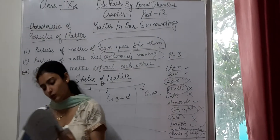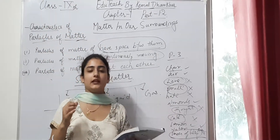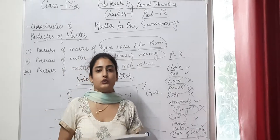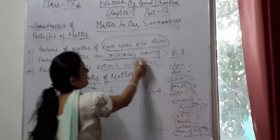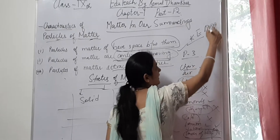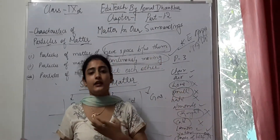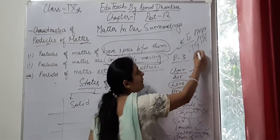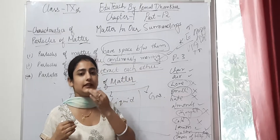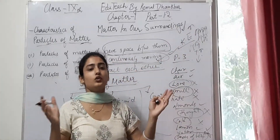If you have hot sizzling food, you can smell it from a distance. The particles of matter continuously move because they possess kinetic energy. When we increase the temperature — when we heat something — the kinetic energy increases and the movement of particles also increases. When temperature is low, the kinetic energy decreases and particles move less.